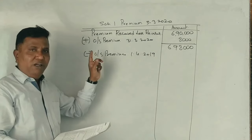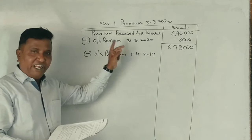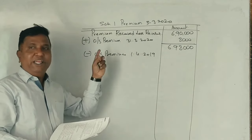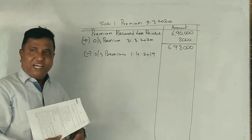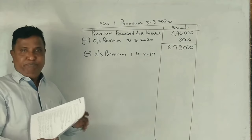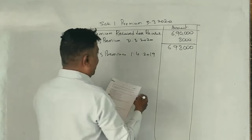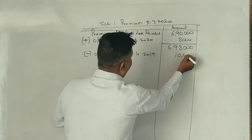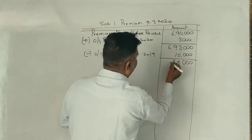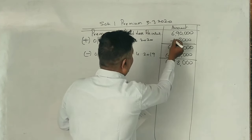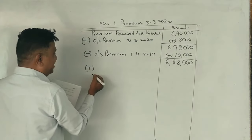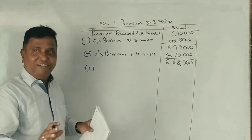Outstanding premium: beginning and ending. Closing — add; opening — minus. This premium one involves claims, commissions, and operating expenses. The opening outstanding is 10,000. Correct. Now it is plus or minus — opening is minus. 10,000 minus.